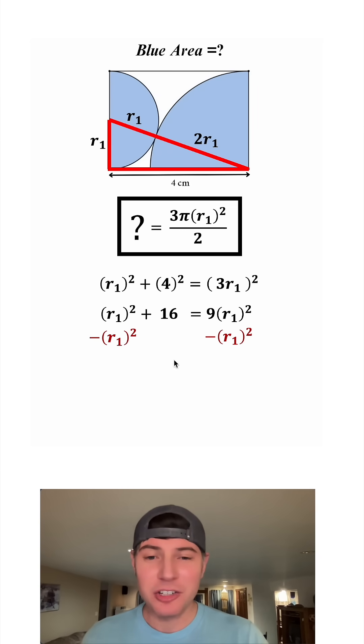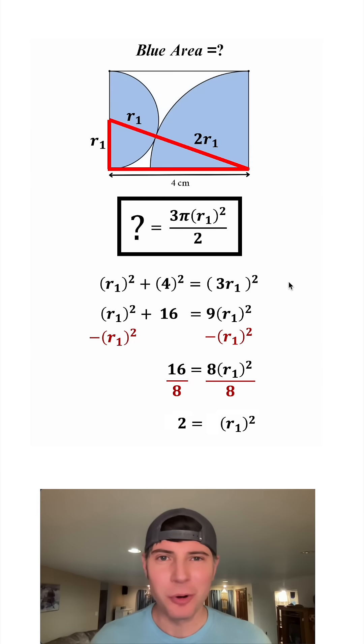We can subtract r sub 1 squared from both sides. On the left-hand side, we have 16, and on the right-hand side, we have 8 r sub 1 squared. Then we divide both sides by 8, which gives us 2 equals r sub 1 squared. We can square root both sides, giving us r sub 1 equals the square root of 2.